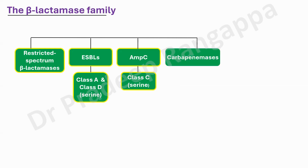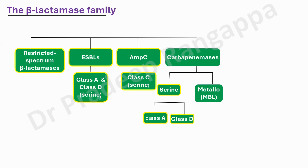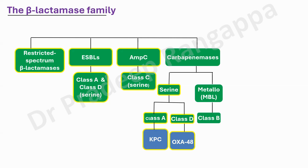The fourth category is carbapenemases. Even here, you can divide into A, D, and B — serine and metallo-beta-lactamases. Serine has class A and class D. In class A it is KPC. OXA-48 belongs to class D, and MBLs are class B. So remember ADB for carbapenemases: class A is KPC, class D is OXA-48, and class B includes NDM, VIM, and IMP — these are the genetic codings for the enzymes they produce.